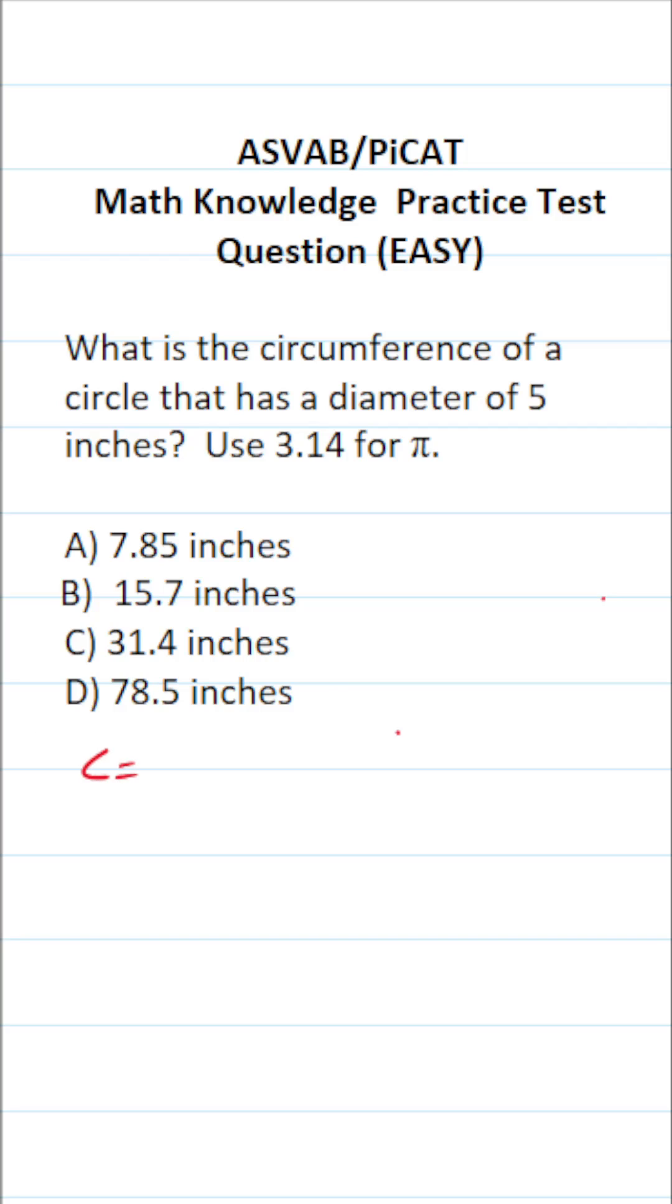As far as calculating circumference goes, there's actually one of two formulas that you can use. Circumference is 2πr, or circumference is πd. Those two formulas are equivalent, and you can use either one to calculate circumference.